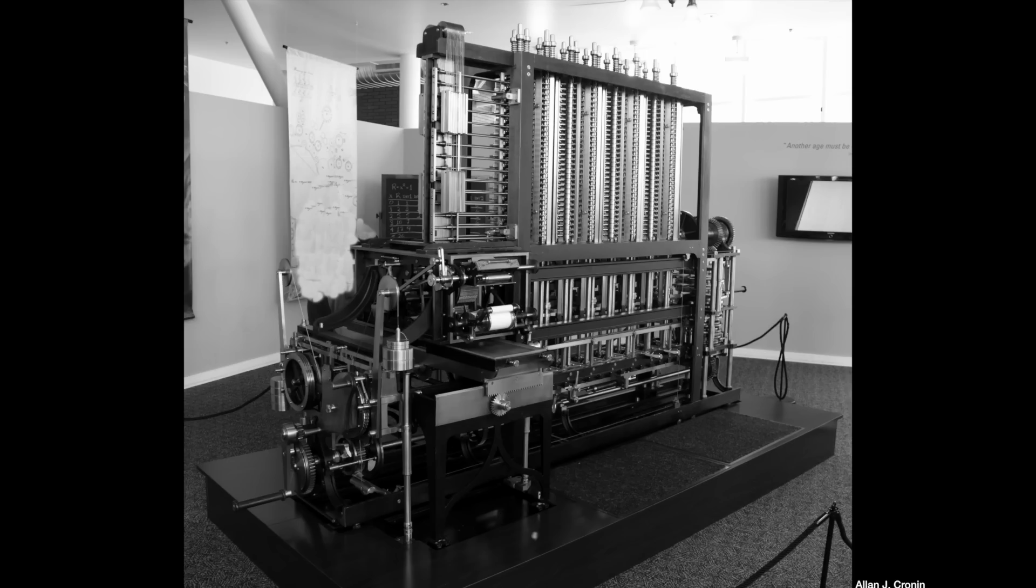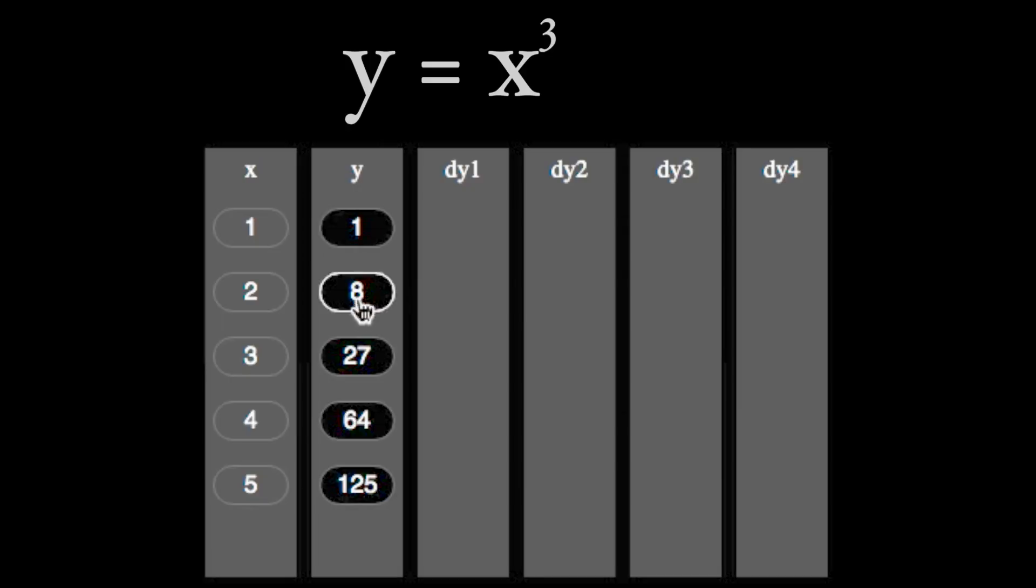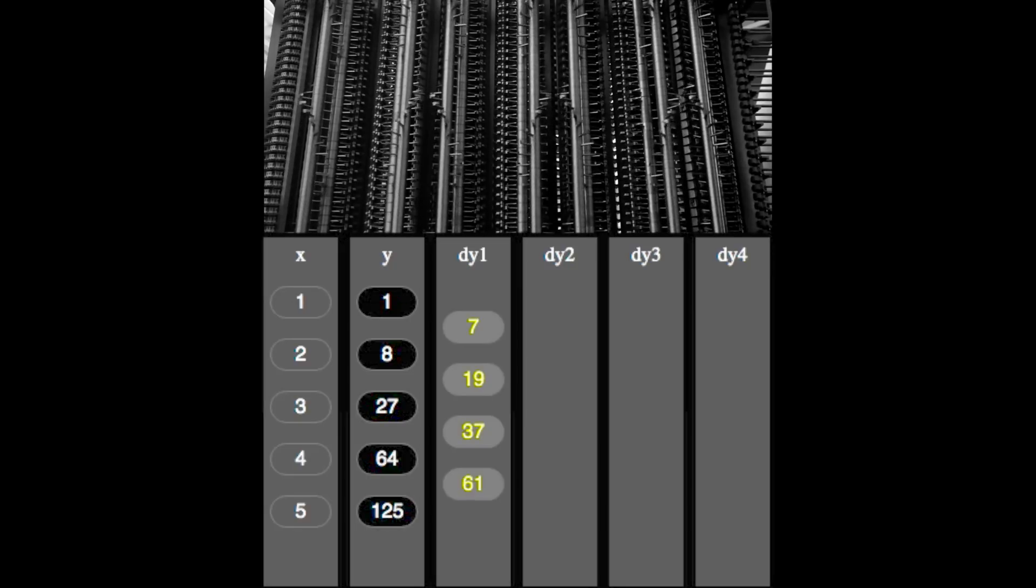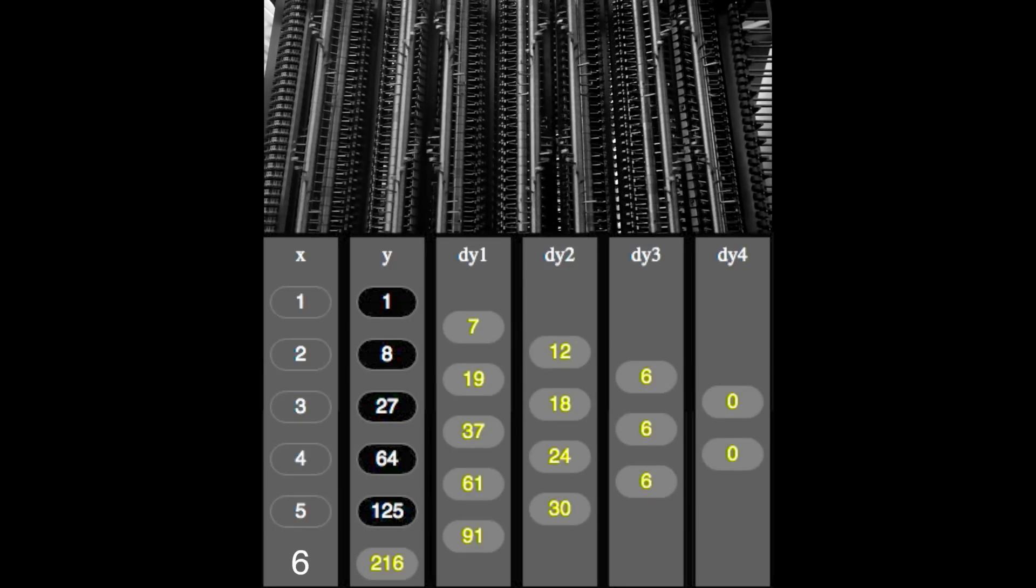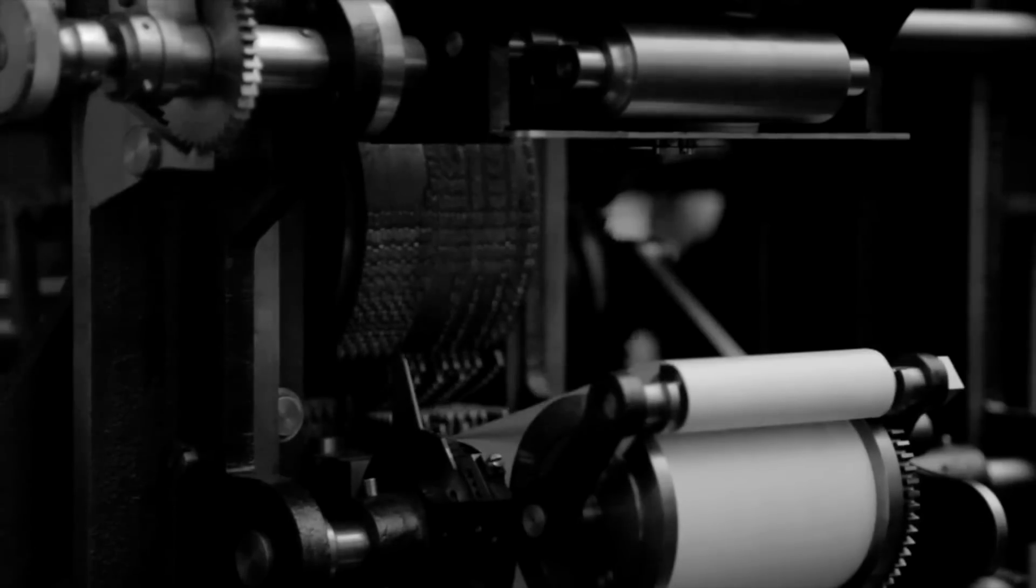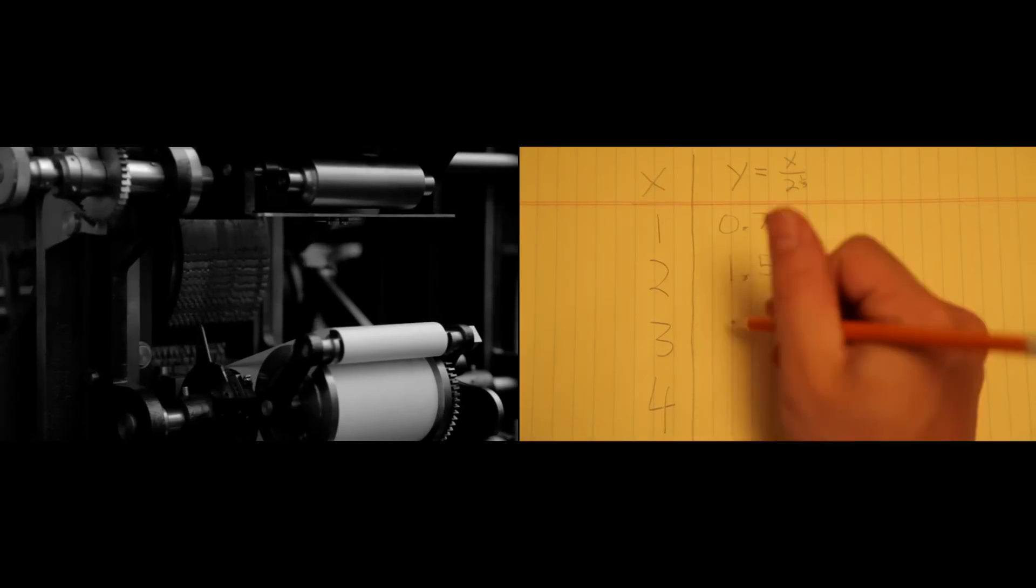Specifically, the operator would take some polynomial that needed solving, and input the first few values of the table by setting a sequence of wheels. And when they turned the crank, the machine performed a cascade of additions and subtractions, and stepped through each value of x, one at a time, and printed the results. Completely automating a once complex and time-consuming human job.